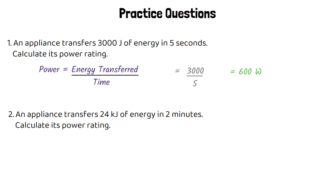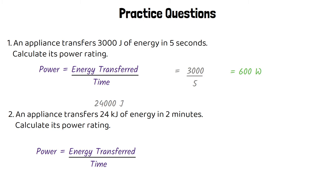For the second question, the energy transferred is given in kilojoules and we need to convert that into joules. 24 kilojoules is the same as 24,000 joules. It's also given the time in minutes, so we need to convert that into seconds — two minutes is 120 seconds. Once we've converted our units, we substitute back into the equation: energy transferred 24,000 divided by time 120 seconds gives us a power rating of 200 watts.